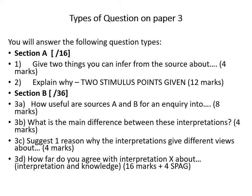The rest of this video will focus on the question types in the exam. Section A of the exam is out of 16 marks and contains two questions. Question one says 'give two things you can infer from the source about' and it's worth four marks. Question two says 'explain why', and you're given two stimulus points. You must also use information of your own, and this is worth 12 marks.